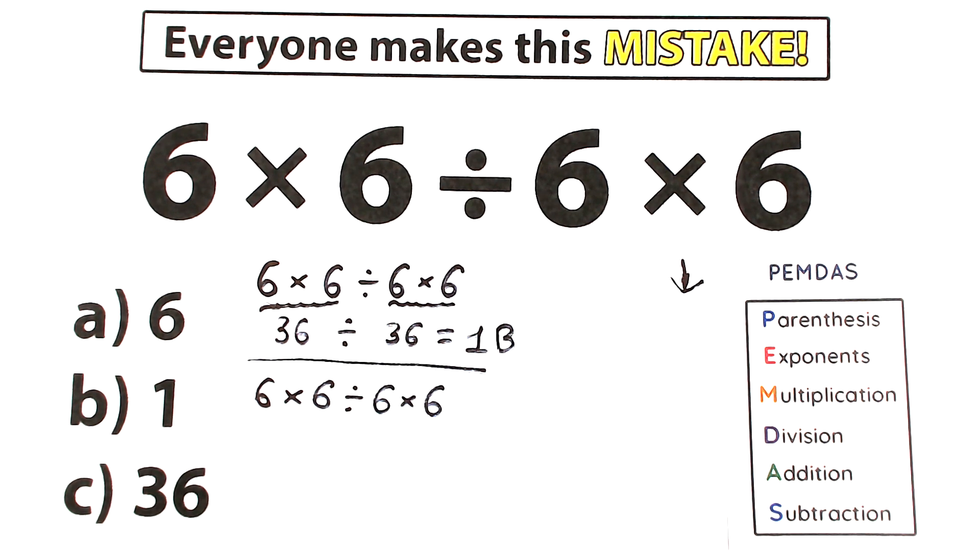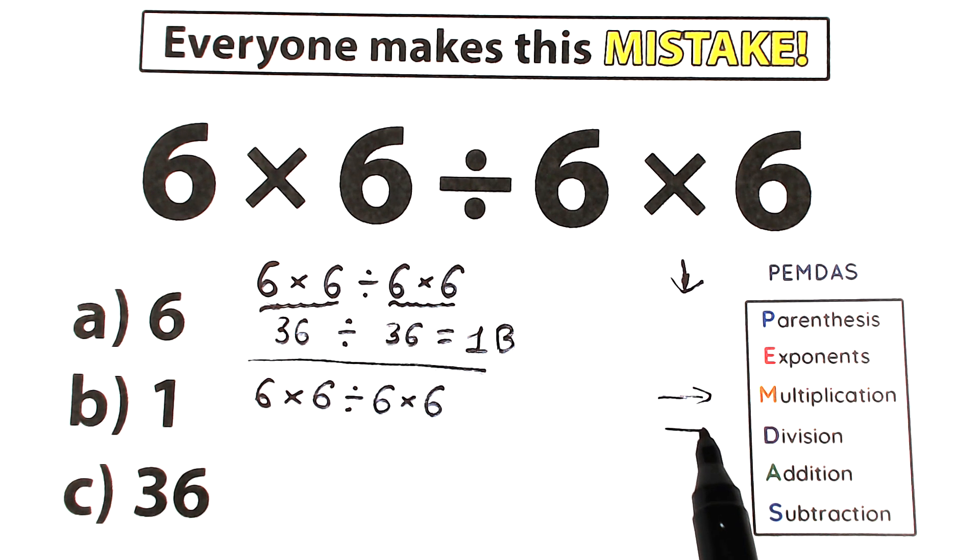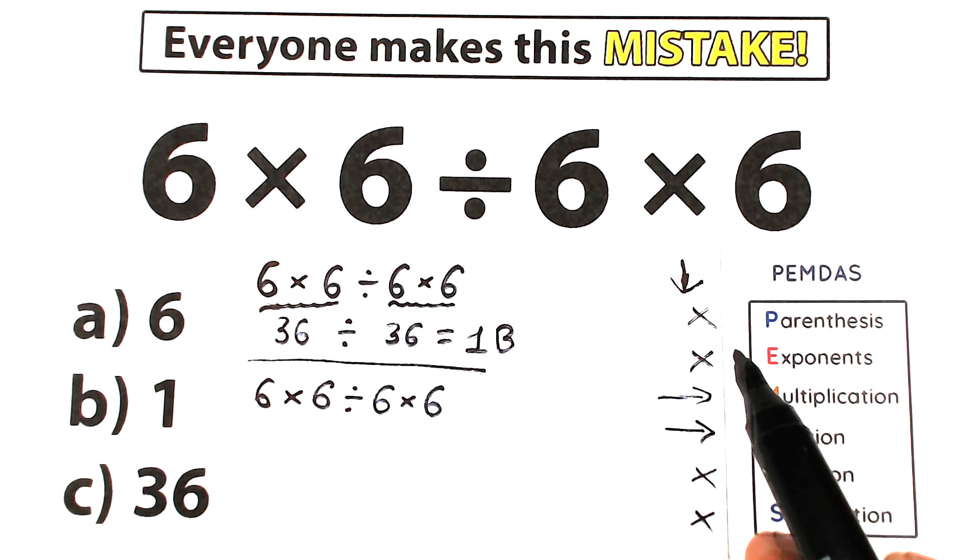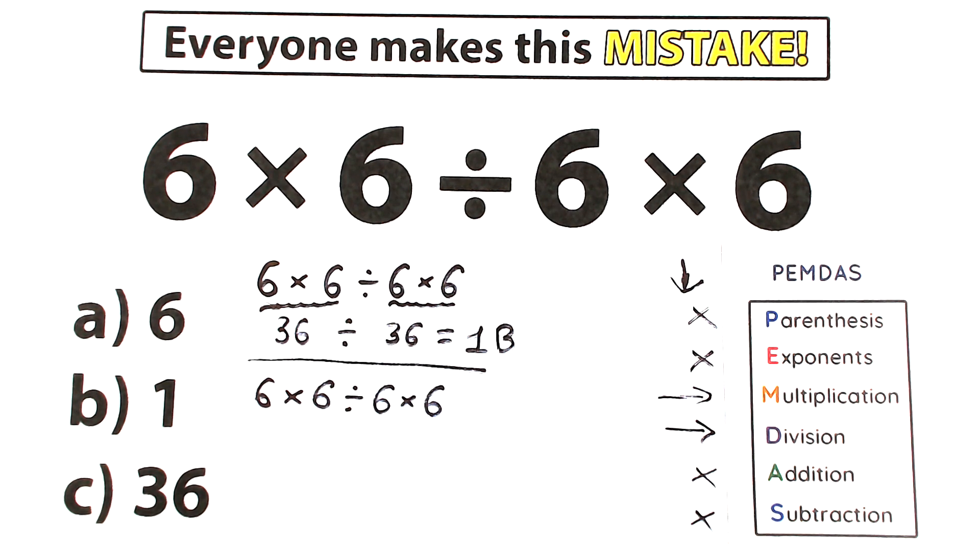Moreover, we have only multiplication and division group. Multiplication we have right here, and division we have after this multiplication. We don't have addition, we don't have subtraction, we don't have exponent, we don't have parentheses. So we have only multiplication and division part.